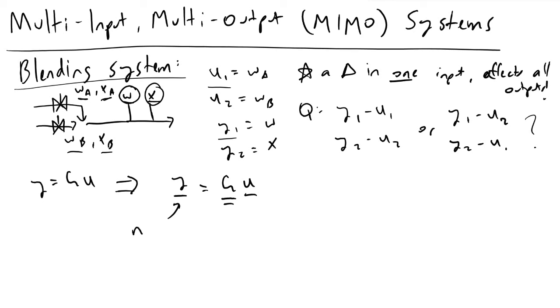Y will be n outputs, g will be an n by m transfer function matrix, and u will be m inputs. In this example that I've just drawn, if we want to start putting it into this notation, we would have y1, y2 is equivalent to g11, g12, g21, g22 times u1 and u2.